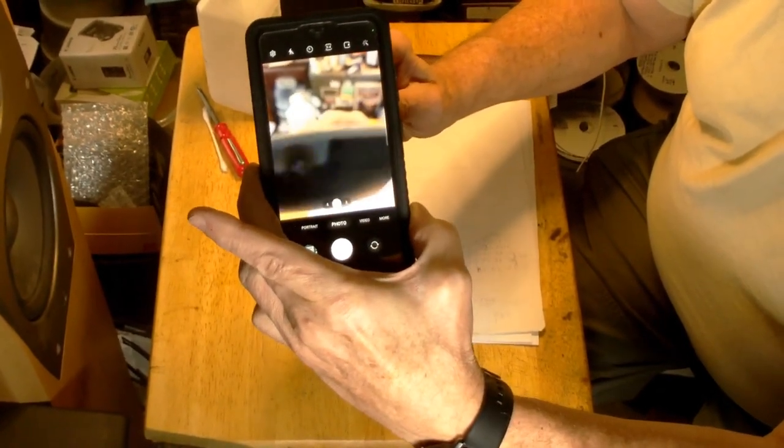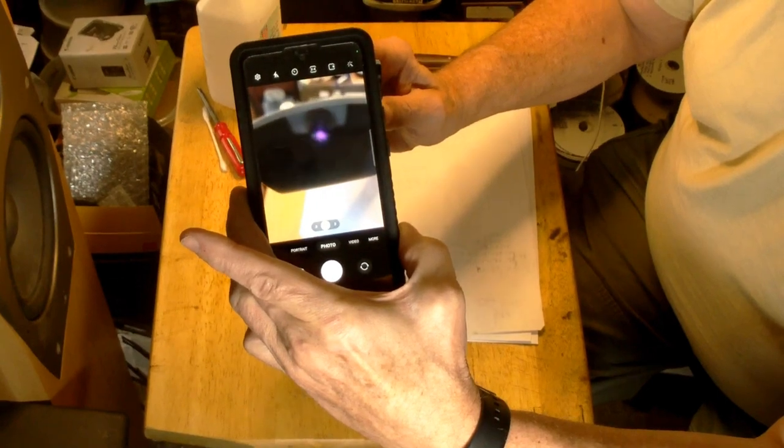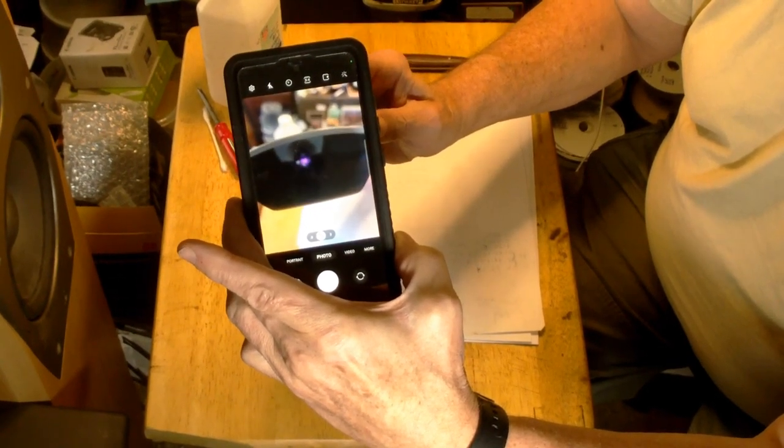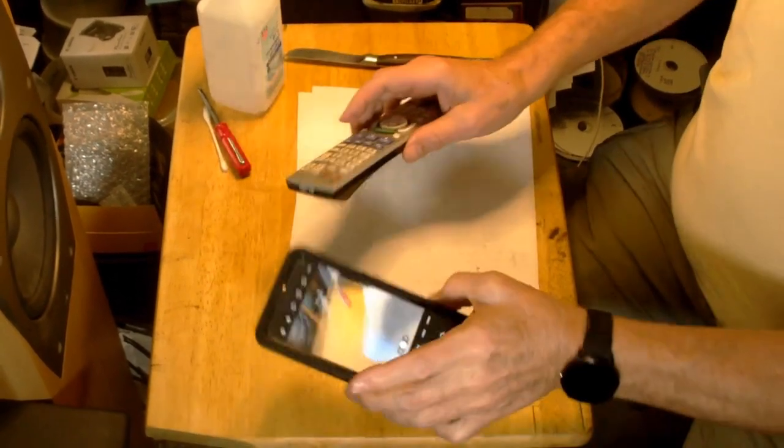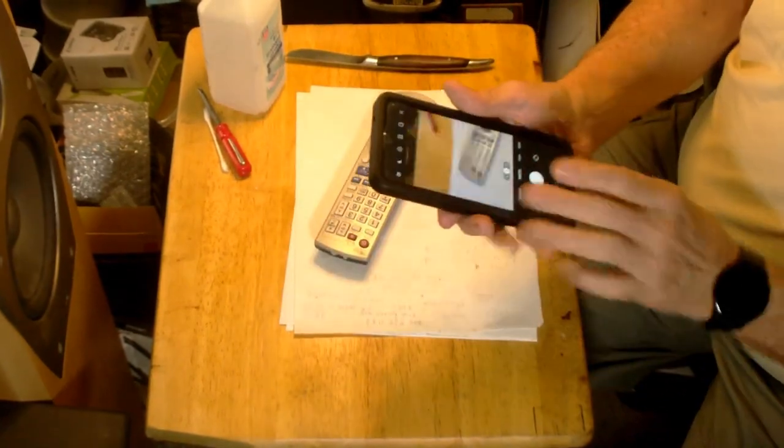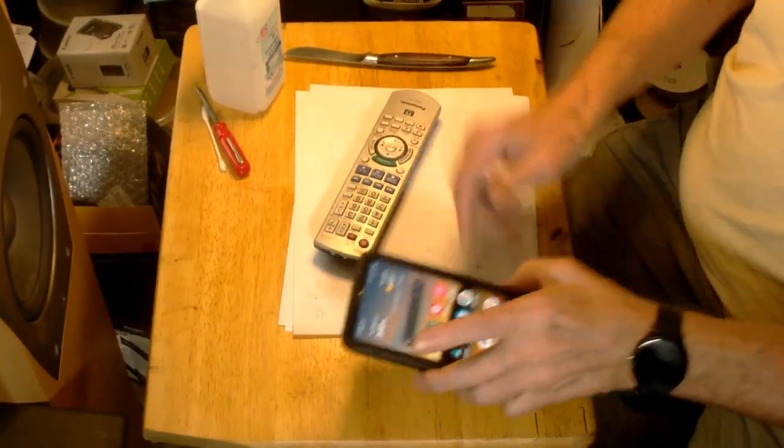You can see that's the light you can see through a camera. Cameras see in different frequencies than the human eye, so that's the way to tell.